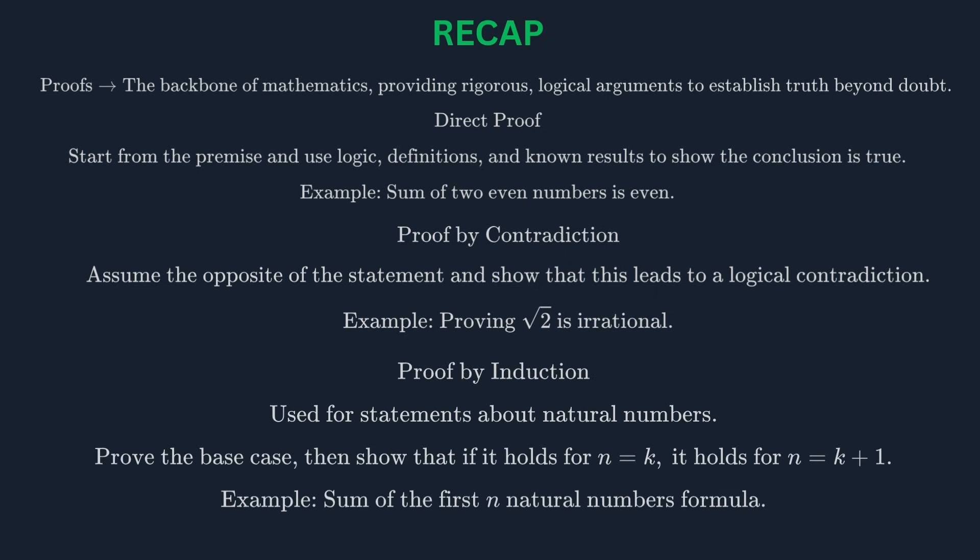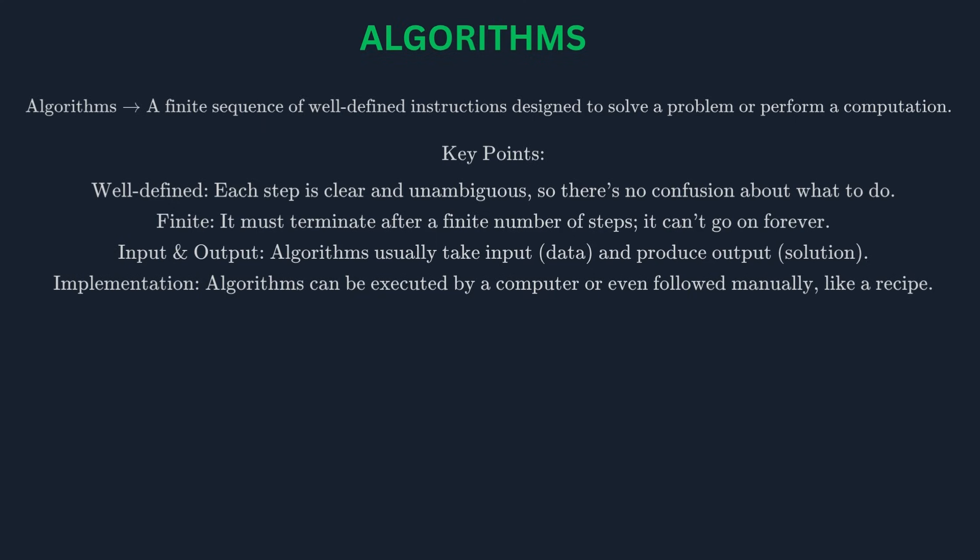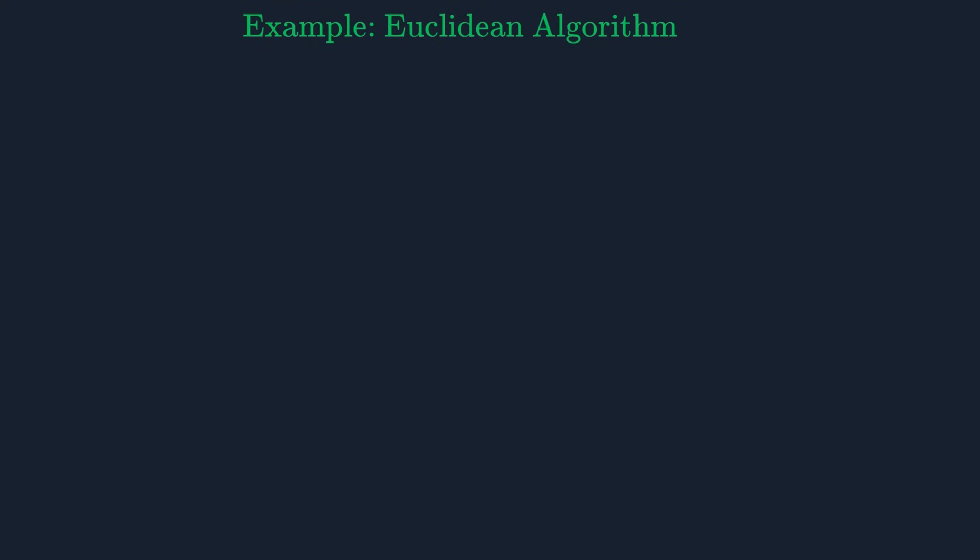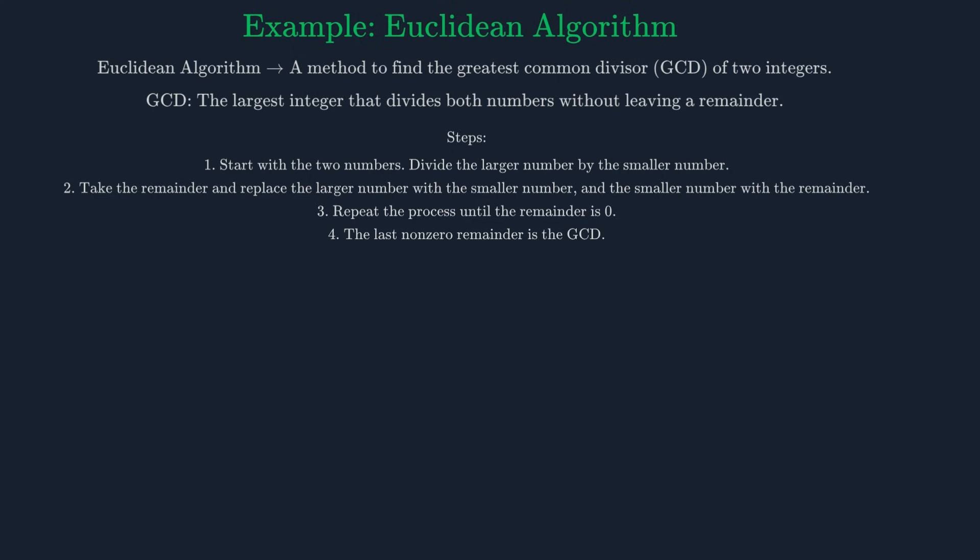Mastering these techniques is key to thinking like a mathematician. Our seventh topic is algorithms. An algorithm is a finite sequence of well-defined, computer-implementable instructions, typically to solve a class of problems or to perform a computation. Think of an algorithm as a recipe—a set of clear, unambiguous steps that, if followed correctly, will always produce the desired result. Algorithms are the heart of computer science. A classic example is the Euclidean algorithm, which finds the greatest common divisor (GCD) of two integers. The greatest common divisor is the largest number that divides both integers without leaving a remainder. Let's find the GCD of 48 and 18 using this algorithm.